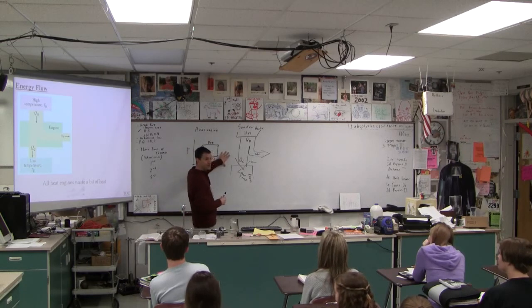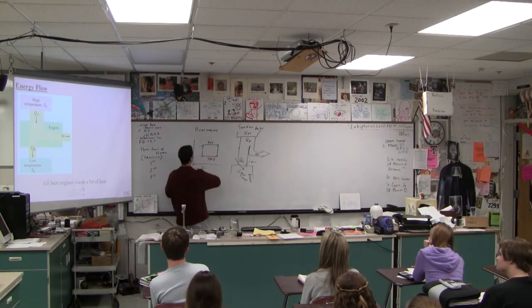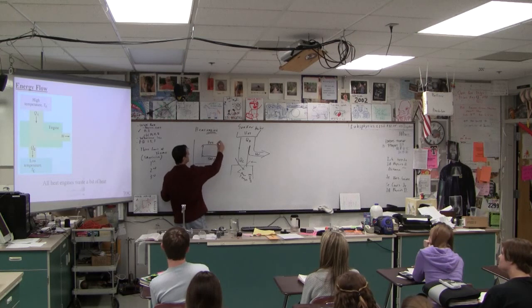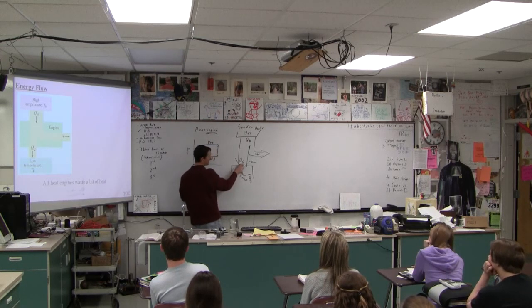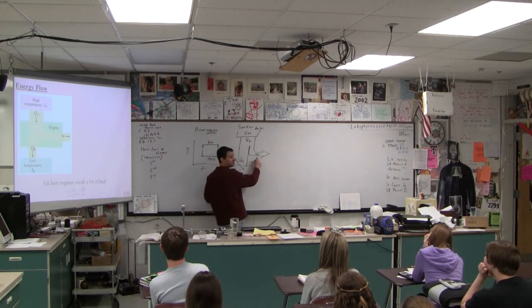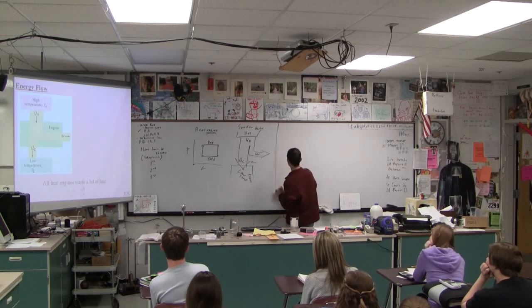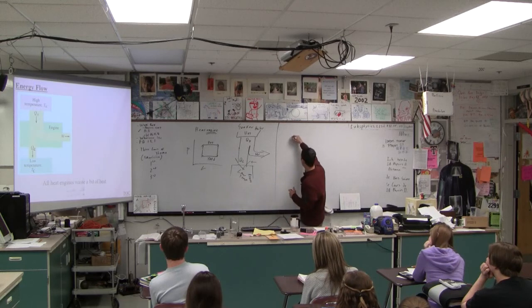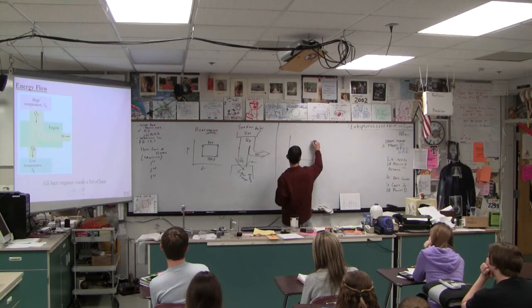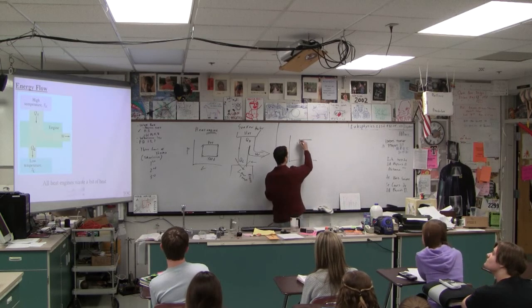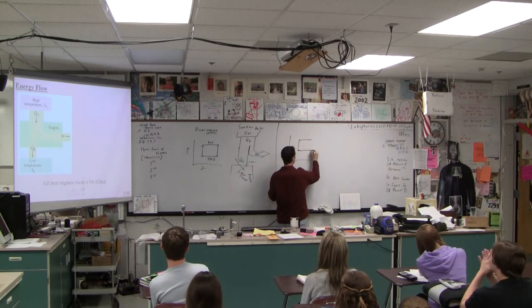So this is a Sankey diagram in a heat engine. If it's an engine, heat flows from hot to cold, some is wasted, but some is useful as work. Now, on the pre-quiz you just did, doesn't the PV diagram go the other way? It's actually compressing at high pressure, isn't it?